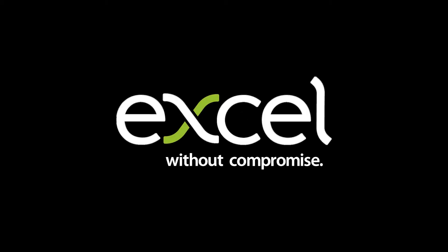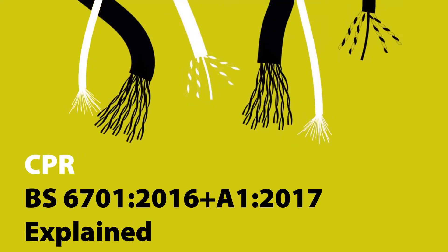Welcome to the latest Excel Networking video briefing. The Excel Explained series of videos has been designed and developed to provide important technology updates in bite-sized sessions, and are based upon frequently asked questions received by our technical team. Each one will last no more than five minutes, or the time to drink a cup of coffee. This particular presentation relates to the Construction Products Regulation and the UK implementation following the publication of the latest revision of BS 6701.